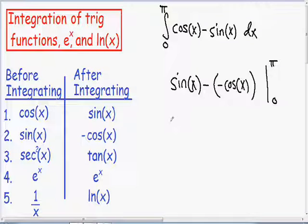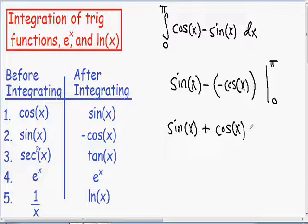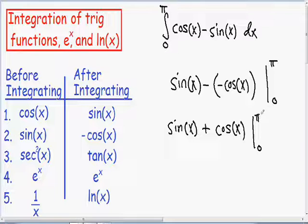Now I'm going to simplify this a little bit. We have the sine of x, and then we have two negatives. We know that two negatives become a positive. I'm going to draw my line with my lower limit of zero and upper limit of pi.